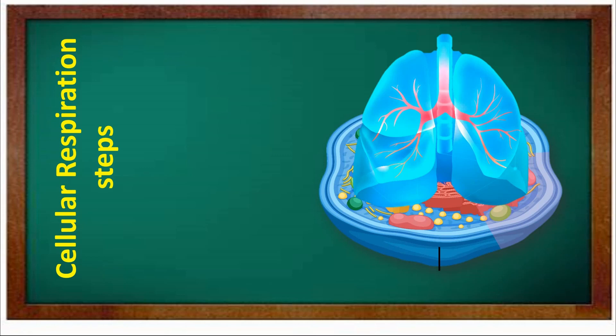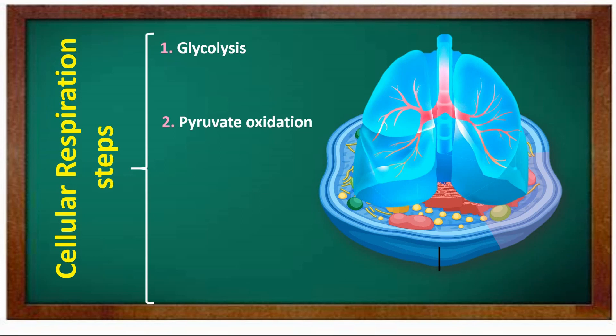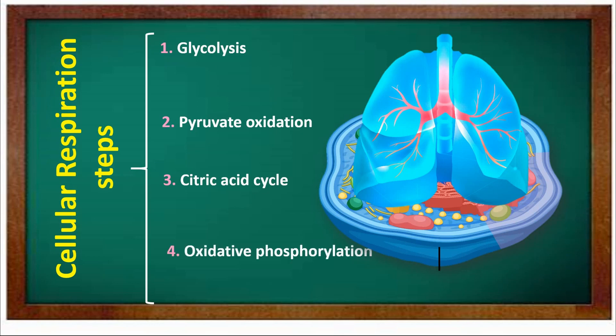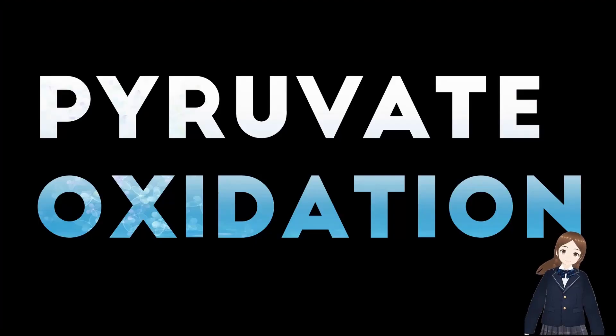Cellular Respiration has four steps. Step 1: Glycolysis. Step 2: Pyruvate Oxidation. Step 3: Citric Acid Cycle. Step 4: Oxidative Phosphorylation.